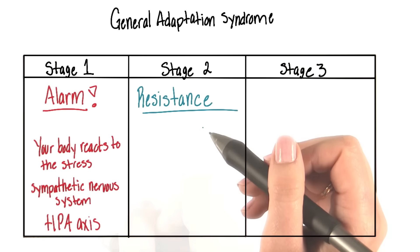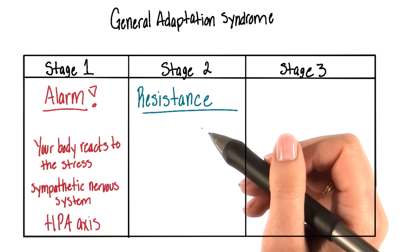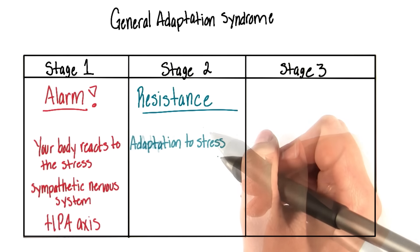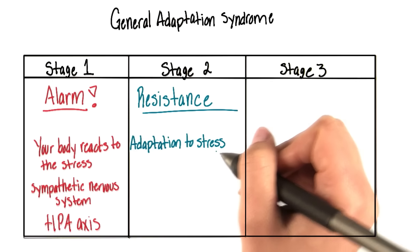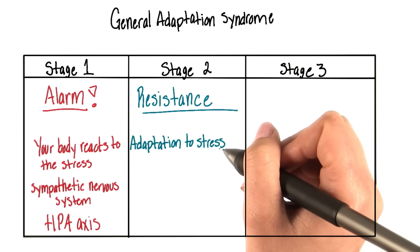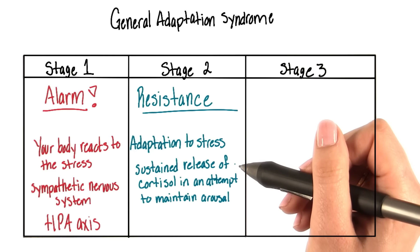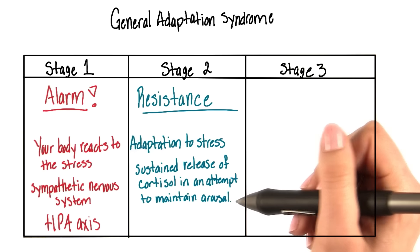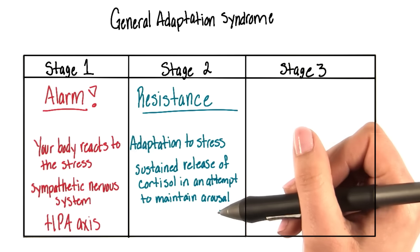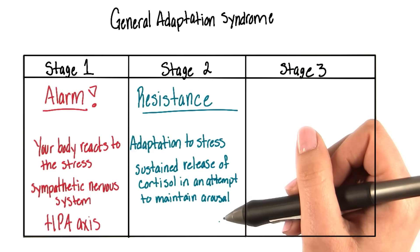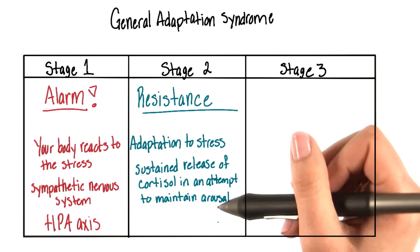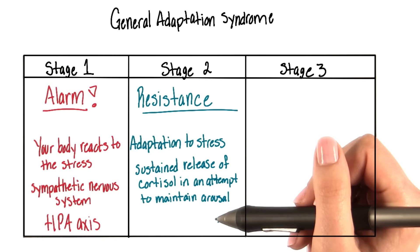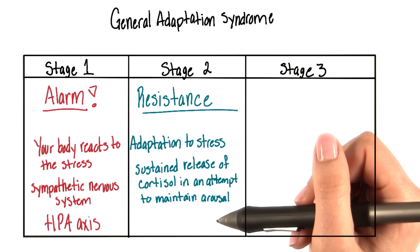The second stage is the resistance stage. This is when your body tries to adapt to the stress. Here we have sustained release of cortisol as our body attempts to maintain our level of arousal to combat the threat or the stressful situation.